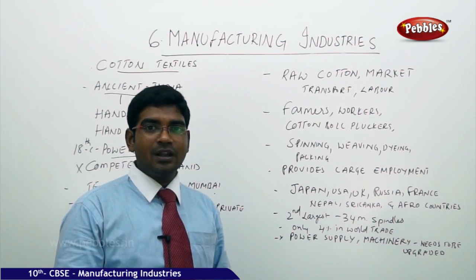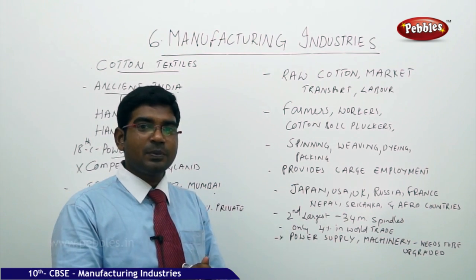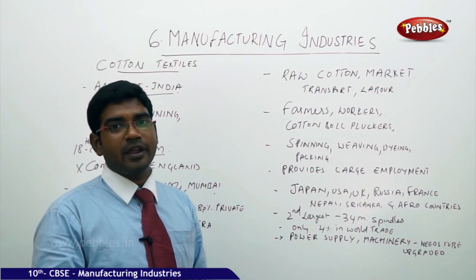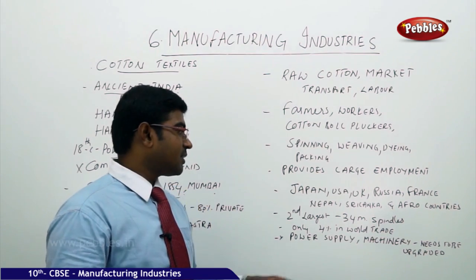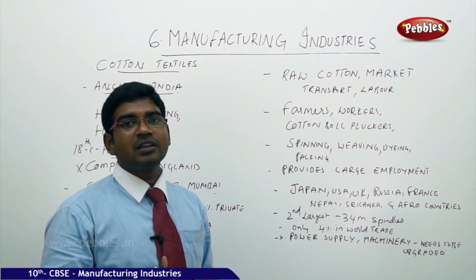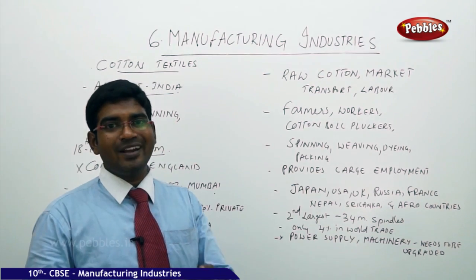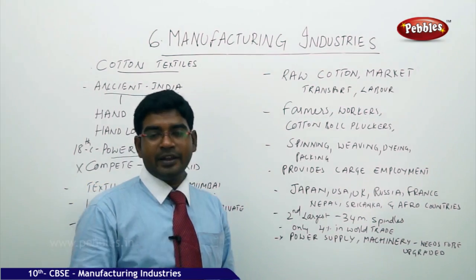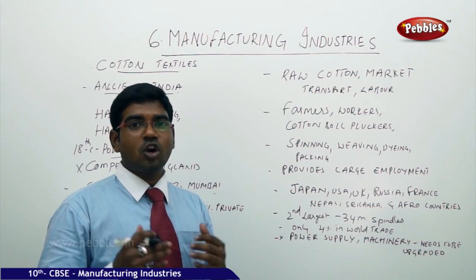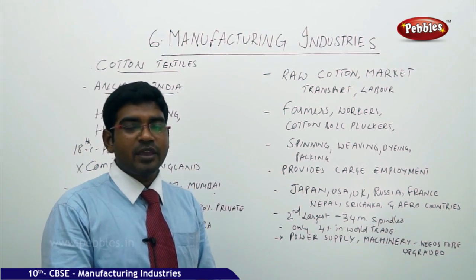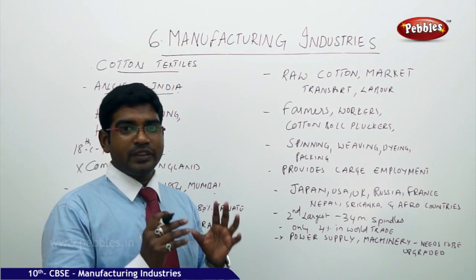After China, India is the second largest country in cotton production, with 34 million spindles. Despite providing employment for many people, India's contribution to worldwide cotton textile trade is only 4%, which is very low relative to its capacity. India faces stiff international competition, and there are several deadlocks hindering development: inadequate power supply, outdated machinery that needs upgrading, and a shortage of skilled labor capable of producing higher output.